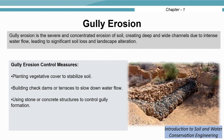You may need to adopt either temporary or permanent measures to control gully erosion. By planting vegetative cover, we can stabilize the soil. By building check dams or terraces, the flow of water can be reduced. You may also use stones or concrete structures to control the formation of gullies.